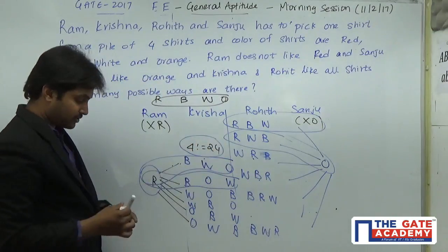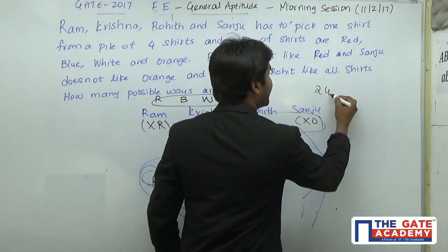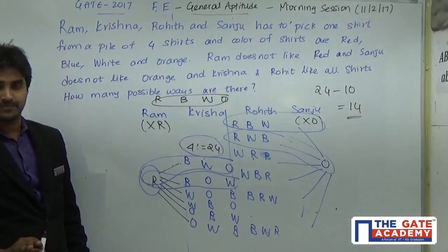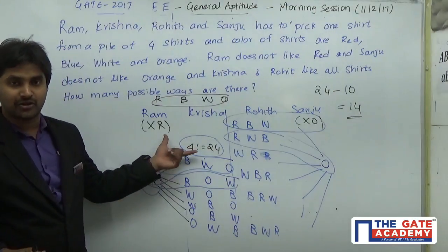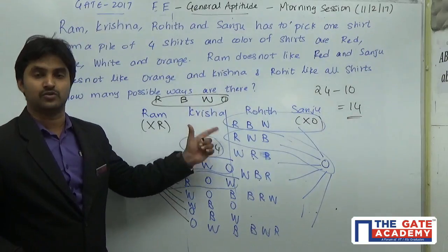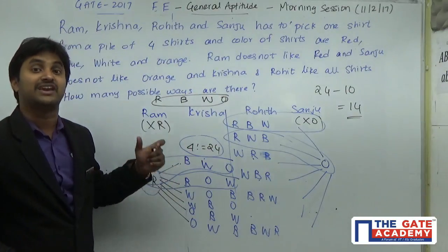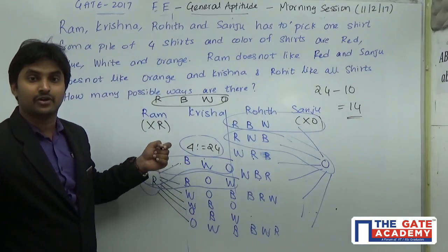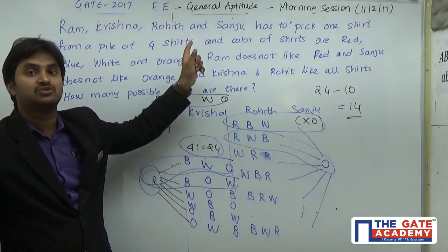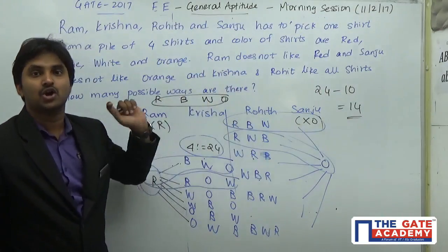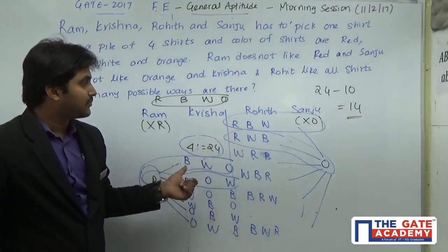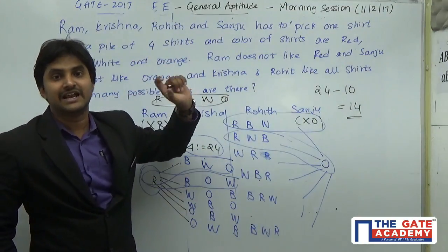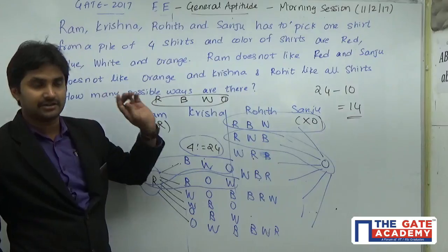So we remove 10 possibilities from the total 24, giving 24 minus 10 equals 14. So 14 is the correct answer. To recap: we first calculate total possibilities as 4 factorial = 24, then remove the cases where Ram takes red (6 cases) and Sanju takes orange (6 cases), subtracting the 2 overlapping cases to avoid double-counting, giving 10 cases to remove. The final answer is 14 — the number of ways everyone gets a liked shirt.